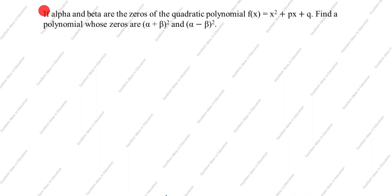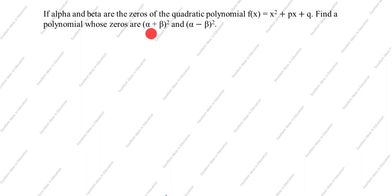Hi friends, welcome to my channel Excellent Ideas in Education. Today we are going to solve this quadratic polynomial problem. This is a very important problem: if alpha and beta are the zeros of the quadratic polynomial s(x) = x² + 6x + 2, find a polynomial whose zeros are (α+β)² and (α-β)².